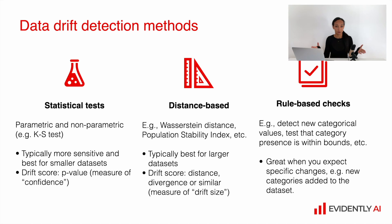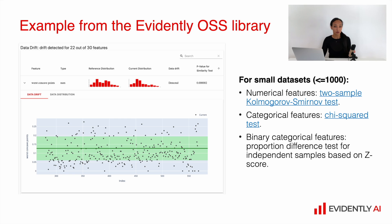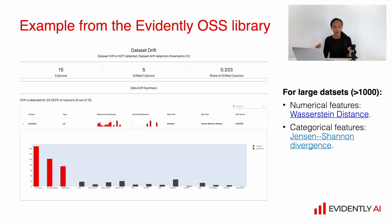Rule-based checks can be applied to features like detecting when a new category has appeared or an important category has disappeared. Here is an example of how a drift detection visualization can look — from the Evidently library, where drift is detected for a numerical feature showing the distribution and feature values over time. The Kolmogorov-Smirnov statistical test was used because the sample size was small. For categorical features we can use chi-square, and for binary categorical features we can use a proportional difference test like the z-score for independent samples. For larger datasets, distance-based metrics like Wasserstein distance or Jensen-Shannon divergence work well.